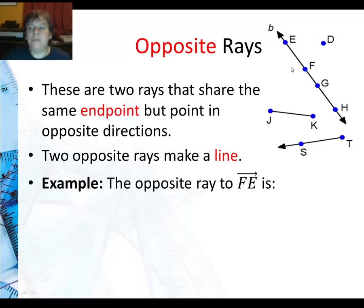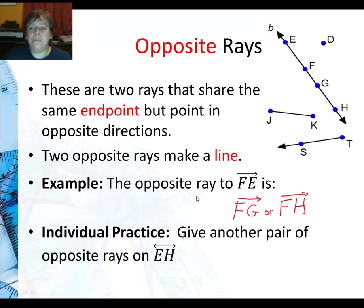So in our example, we're looking at the opposite ray to FE. Well, there's actually a couple of different answers. We could say it has to have the same endpoint, so it has to start with F, and it's going in this direction. I have two points over here that help me with that. So I actually have two possible answers: FG, see the arrow on the right, or FH, also the arrow over the H. On your own, why don't you give another pair of opposite rays on EH? I would recommend that you don't use F as your endpoint. Try it, I'll give you a hint. Use G.